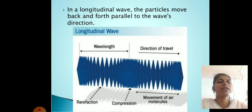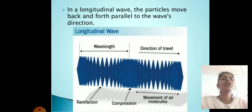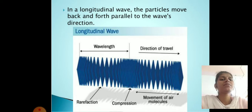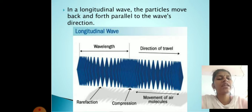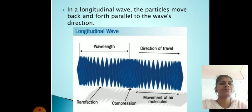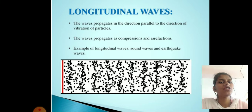In a longitudinal wave, the particles move back and forth parallel to the wave's direction. In transverse waves the direction is perpendicular to propagation; in longitudinal waves the particles move back and forth parallel to the wave's direction.